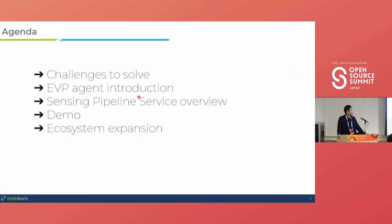The agenda for this presentation: I want to go through the challenges we have to solve. Then I'll introduce EVP Agent, the component we're going to open source. Then I'll introduce the cloud component of the platform, which we call the Sensing Pipeline Service. Then we'll have a demo, and then Kenji is going to go over the ecosystem expansion we're working on.